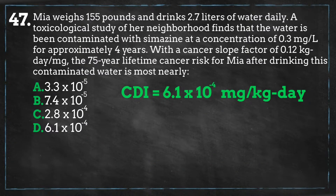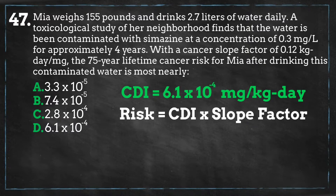Using our chronic daily intake rate, we can now calculate our risk, which equals the intake rate multiplied by the cancer slope factor. Cancer slope factors are used to estimate the risk of cancer associated with exposure to a carcinogenic or potentially carcinogenic substance. A slope factor is an upper bound, approximating a 95% confidence limit on the increased cancer risk from a lifetime exposure to an agent by ingestion or inhalation. This estimate is usually expressed as the proportion of a population affected.